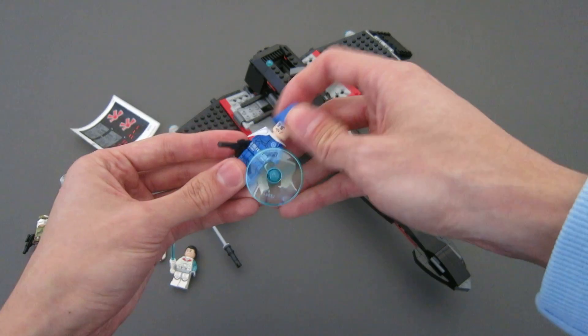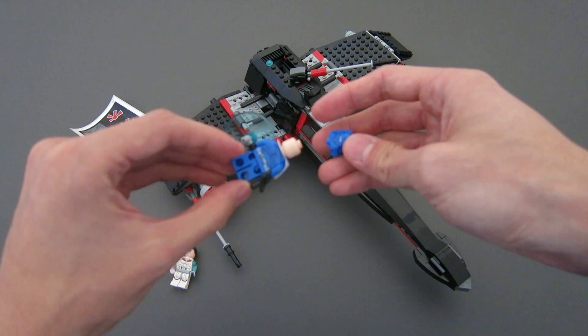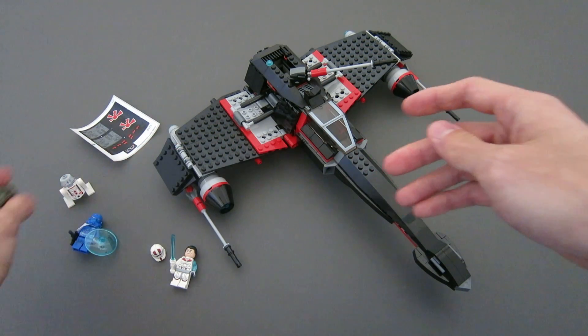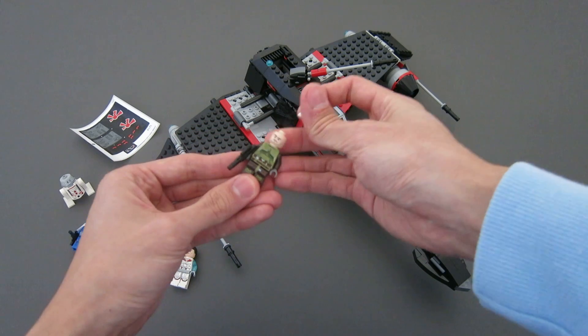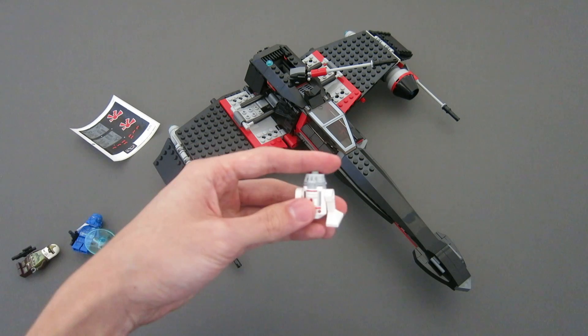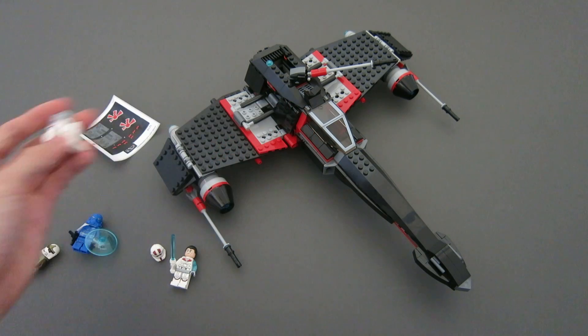This is a special task force clone trooper. There's printing on the front and printing on the back. And this is a bounty hunter. There's the head printing and then printing on the back. And an astromech droid, which I don't remember the exact number.